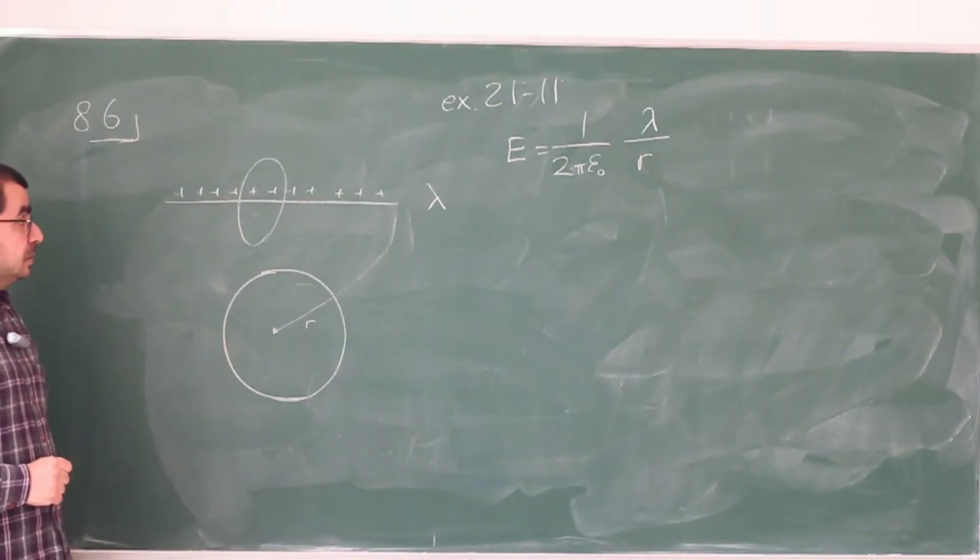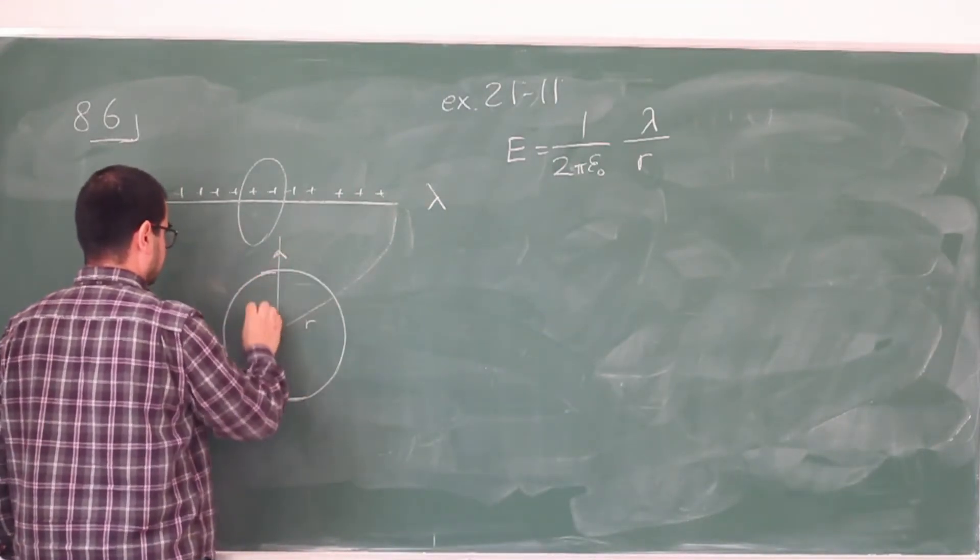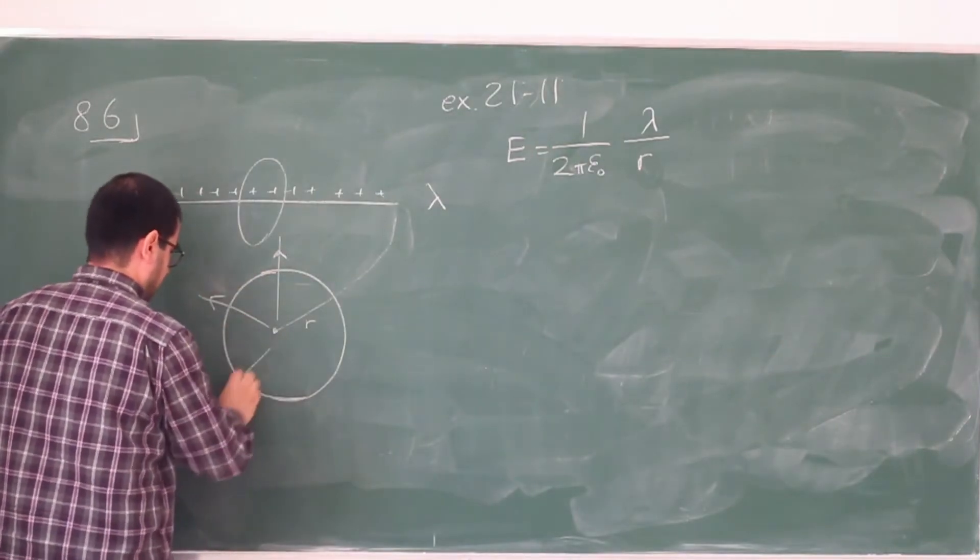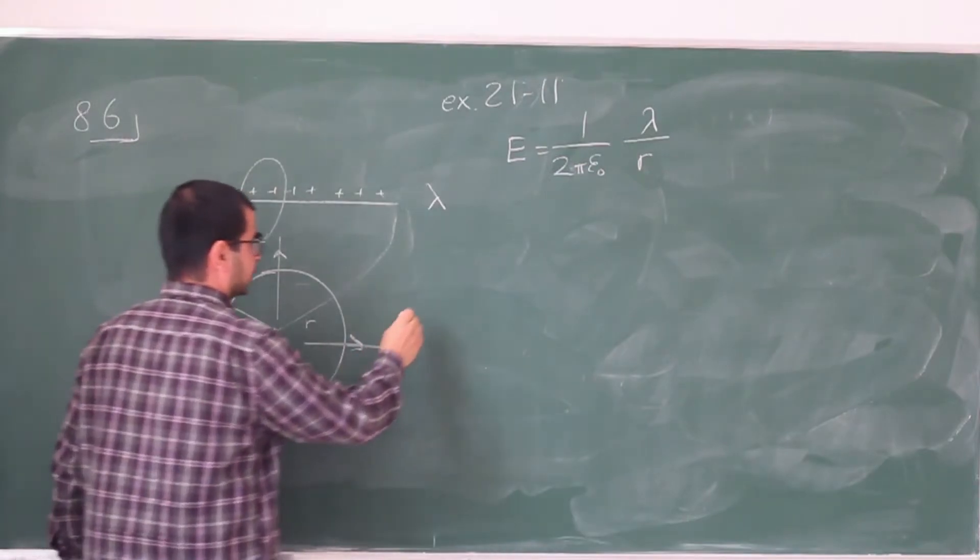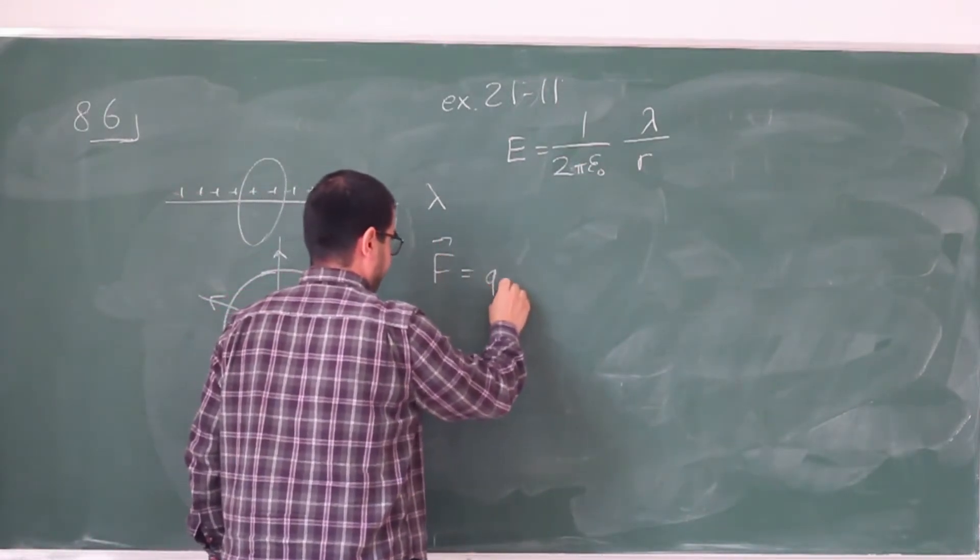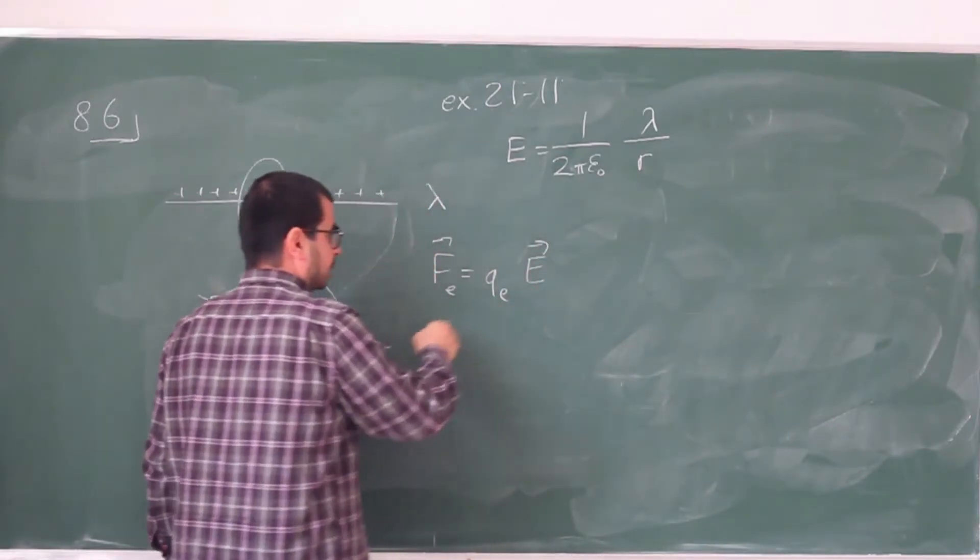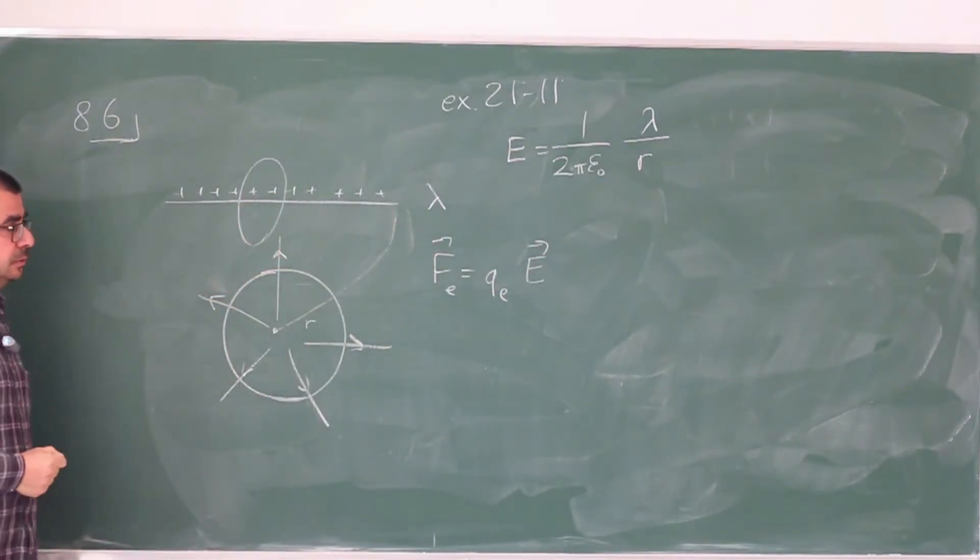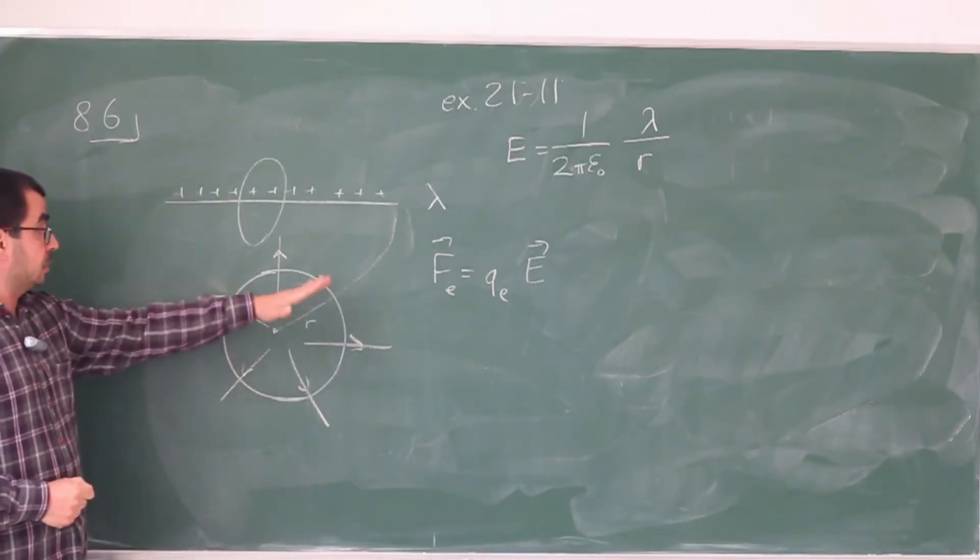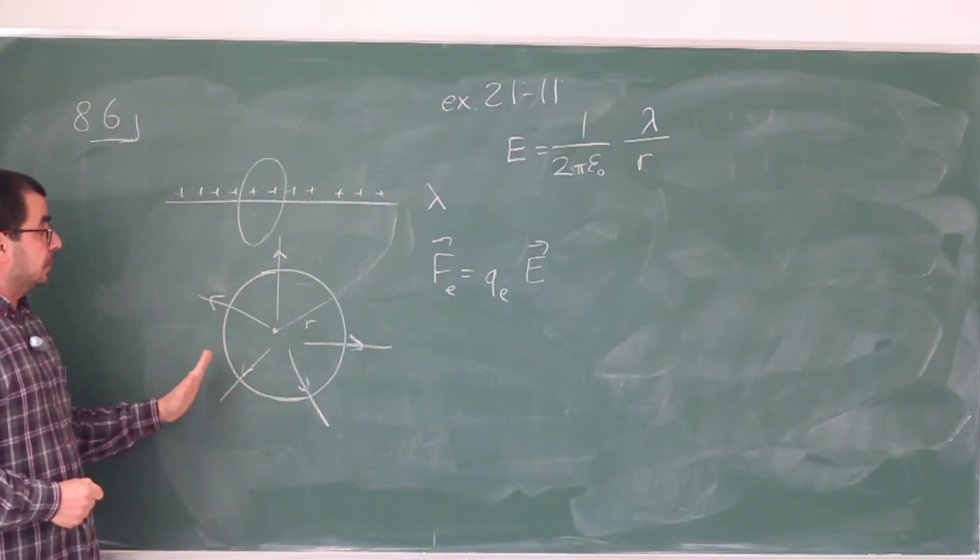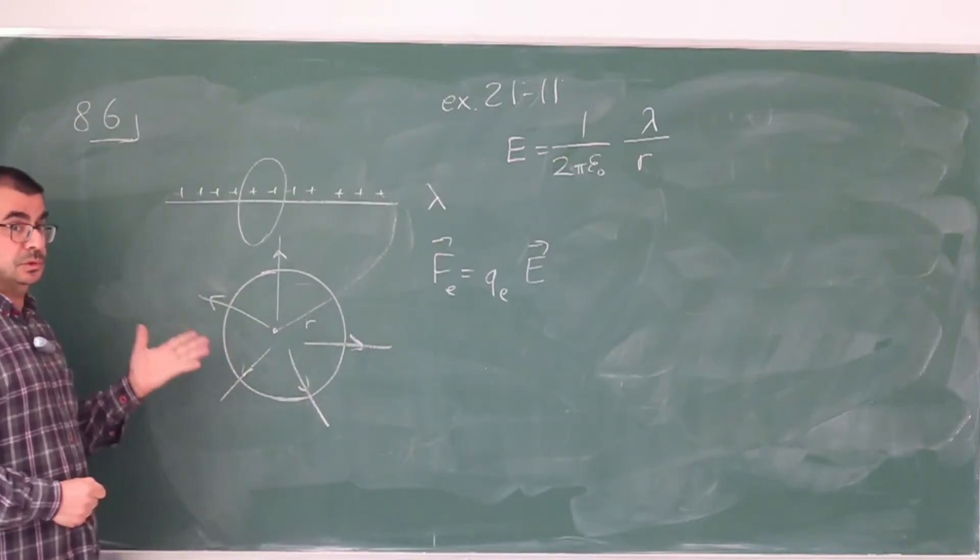So the electric field here is going to look like this. And electron being negatively charged is going to feel a force. So the force felt by the electron is going to be the electric field times charge of the electron. Because the charge of the electron is negative, the force is going to be opposite to the electric field. It's going to be towards this line. So there is a central force, centripetal force that makes this electron go around in a circle.